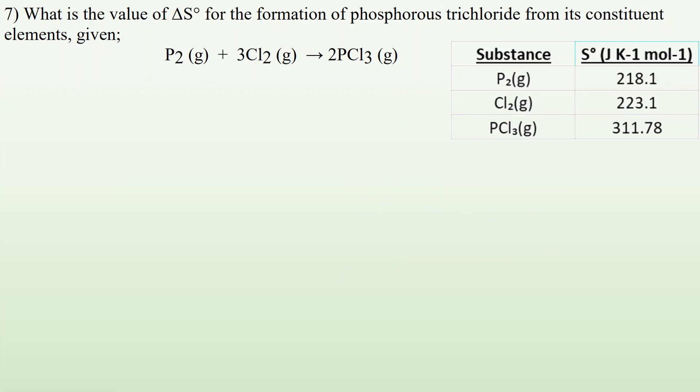Number seven. What is the value of delta S NO for the formation of phosphorus trichloride from its constituent elements given in this equation right there? So same process. I look up P2. It's 218.1 joules per mole Kelvin plus,